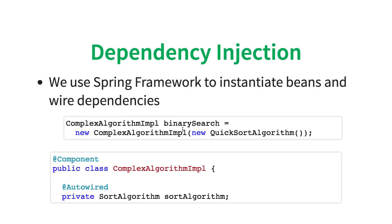In the loosely coupled implementation, the user of ComplexAlgorithmImpl decides: I will use ComplexAlgorithmImpl with this specific algorithm. You can see the inversion in terms of responsibilities. ComplexAlgorithmImpl is no longer responsible for choosing the specific algorithm. It is saying: give me whatever algorithm you want and I will work with it. ComplexAlgorithmImpl is decoupled from which sorting algorithm it needs to use — whichever algorithm you give it, it will work with.